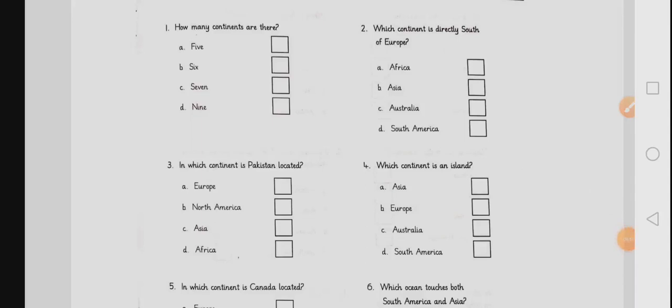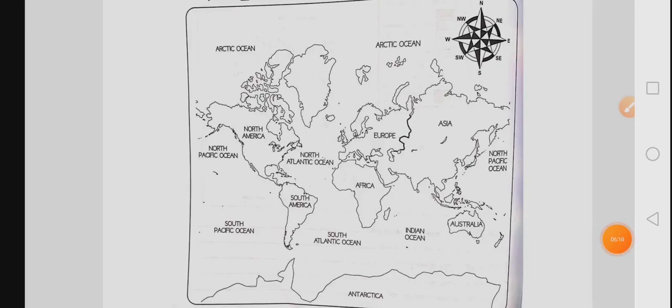Here is the worksheet. Let's read the questions one by one. How many continents are there? Dear students, in this world, there are 7 continents. Which continent is directly south of Europe? Now, let me tell you how to solve it. Open the world map and find Europe. Here is Europe.